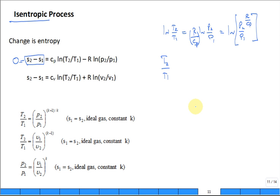Now I exponentiate both sides to get T2 over T1 equals P2 over P1 to the power of R over C_P.